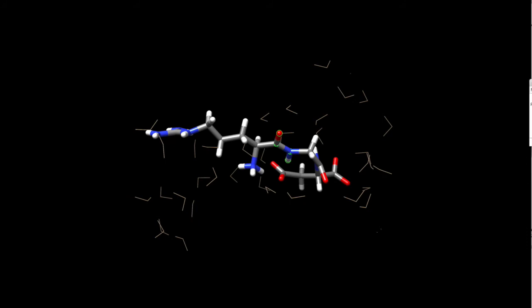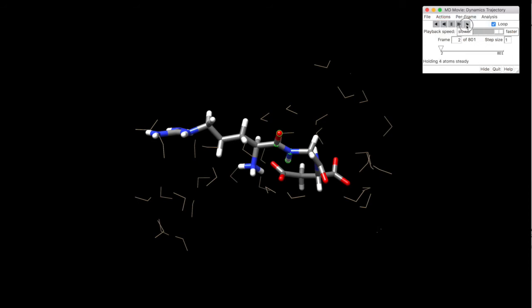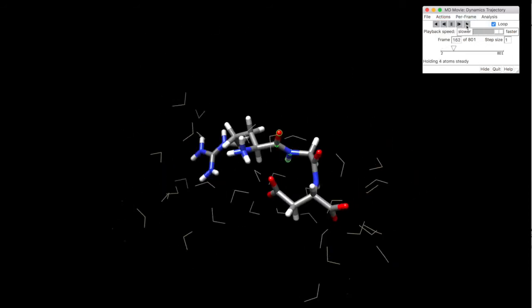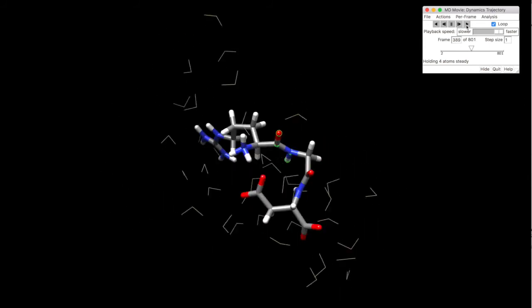Another very interesting feature is that you can select a particular set of atoms and you can keep them steady while everything else moves around. To do that you have to select the atoms, your choice, click on actions, hold selection steady, and upon playing the frames you see the whole system moves and your set of atoms stays the same.